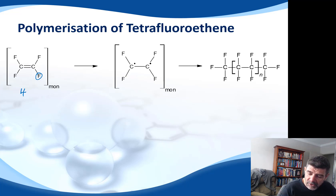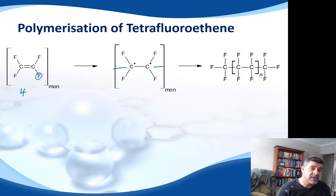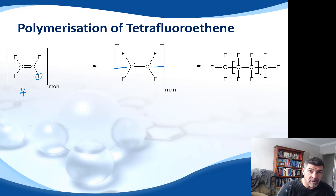When we're drawing our polymers this time, we can see that we have the breaking of the double bond and the linking that occurs to different monomers, but this time there are no hydrogens in the structure — they're all fluorines. This is going to create a change in the shape of this polymer and also affect some of its properties.